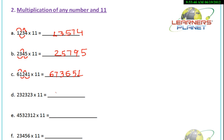Similarly, we try the next problem: 232323 into 11. Write 3 here. Then 2 plus 3 is 5. 3 plus 2 is 5. 2 plus 3 is 5. 3 plus 2 is 5. 2 plus 3 is 5, and then 2 as it is. So 232323 into 11 gives you 2555553.